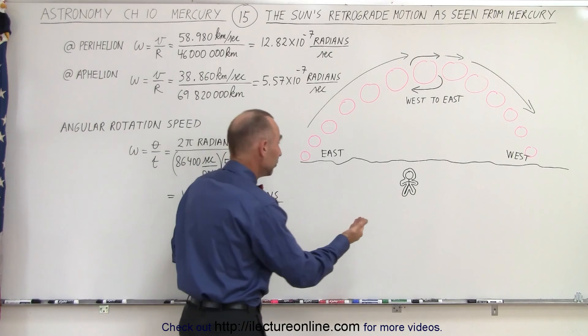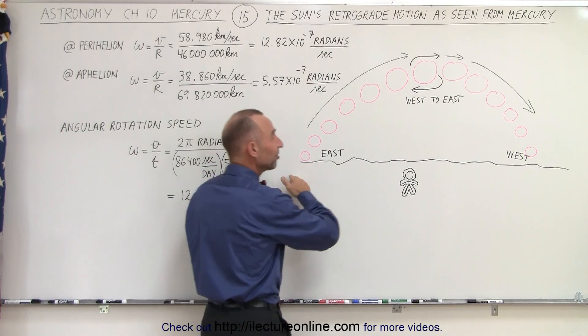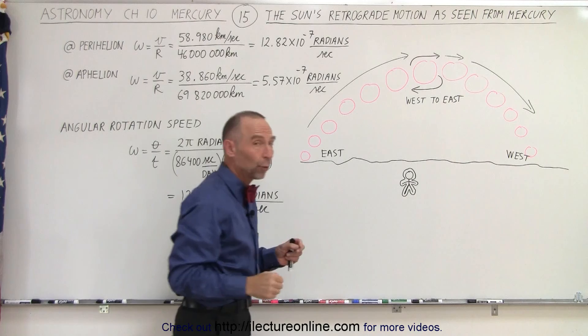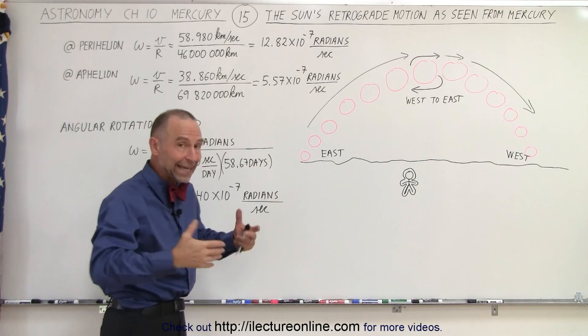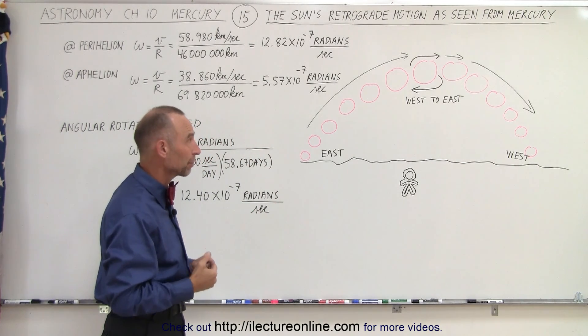Just like on Earth, the Sun will rise in the east in the morning and set in the west in the evening. Of course that period on Mercury will take 88 Earth days, a very long period of time.